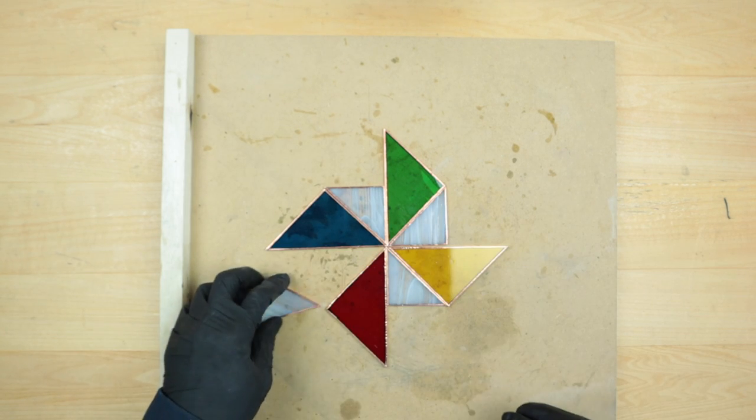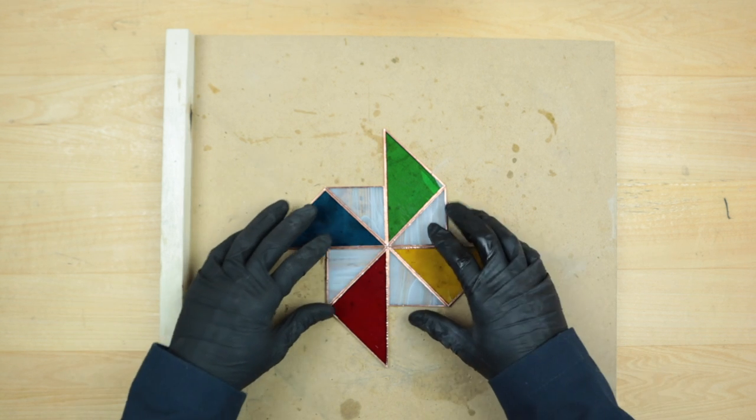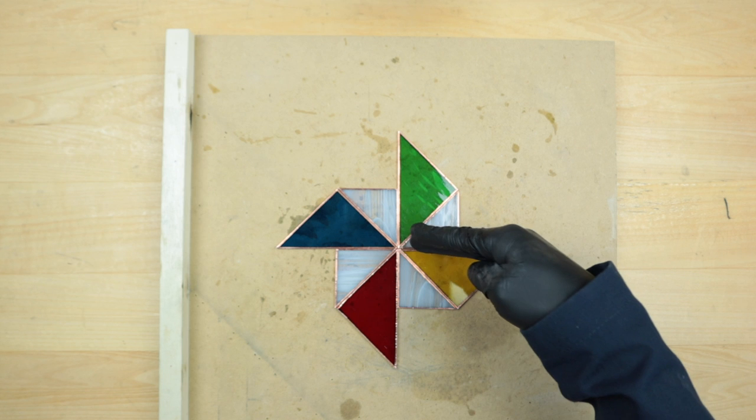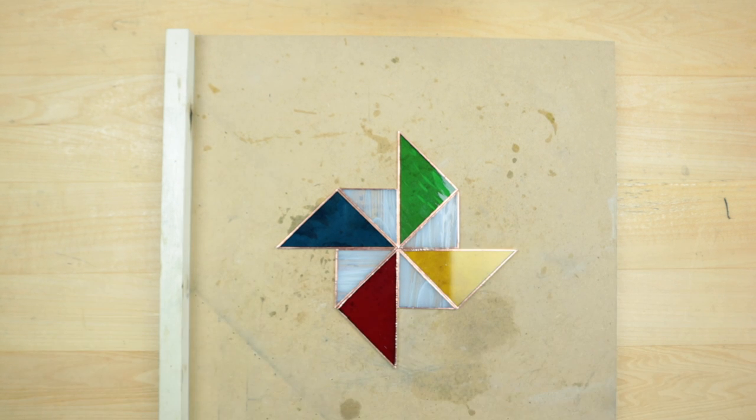All right, you've got to put it back together correctly to make sure that it looks like a pinwheel. Okay, first things first. We're going to tack solder the pieces together so they hold and we'll get out the soldering iron and all that good stuff.